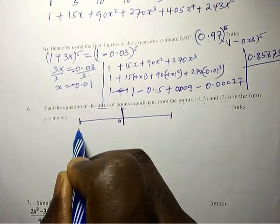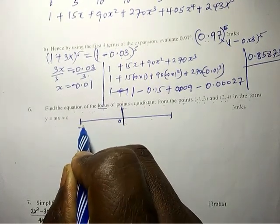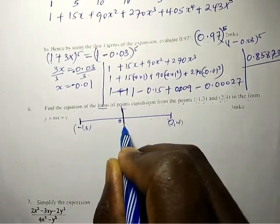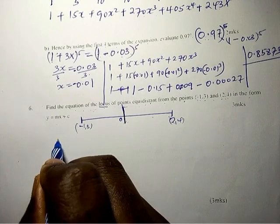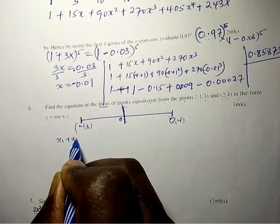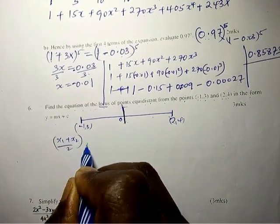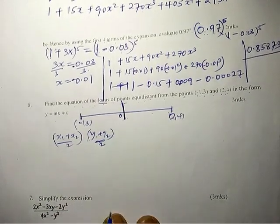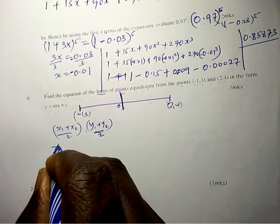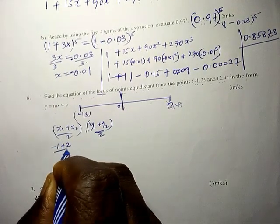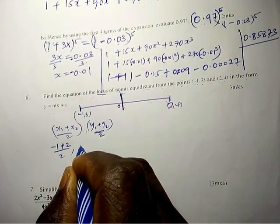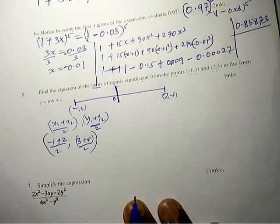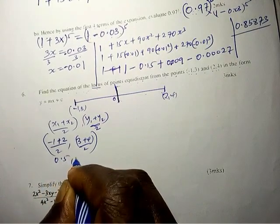We have point negative one, three and point two, four. First we get the midpoint: x1 plus x2 divided by 2, y1 plus y2 divided by 2. That gives us negative 1 plus 2 over 2, comma 3 plus 4 over 2.